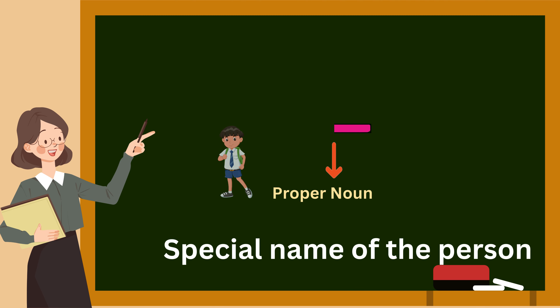'Paris is a beautiful city.' In this sentence, 'Paris' is the proper noun. It is the special name of a place.